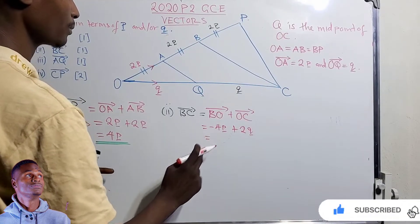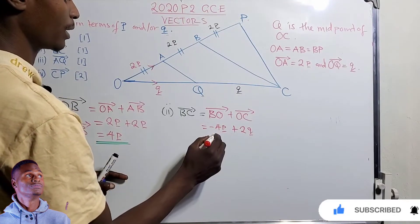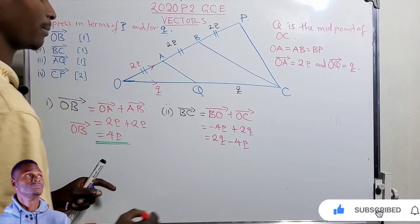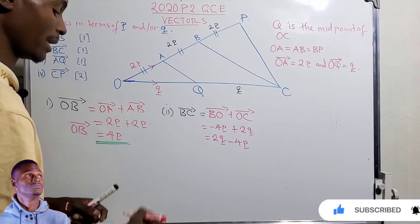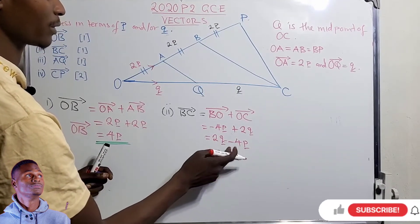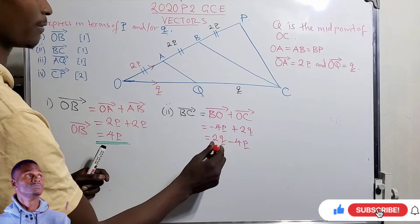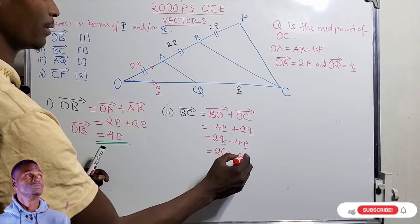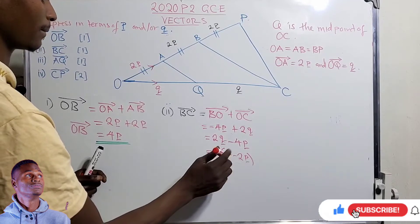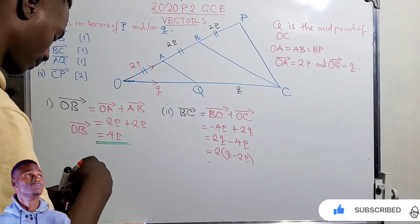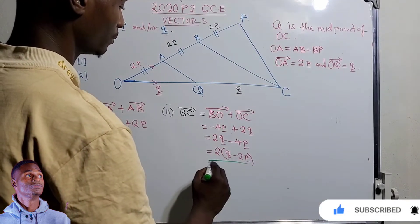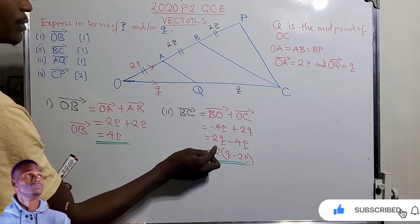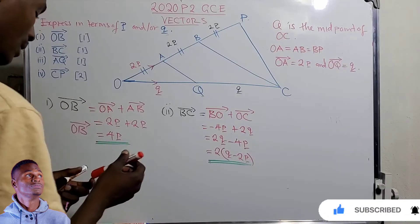Under vectors, we always start with the positive vector. So BC equals two vector q minus four vector p. We can't subtract these since they are unlike terms, so we factorize. The common factor is two, giving us two brackets open: vector q minus two vector p. That is the answer. When substituting BC elsewhere, use the expanded form.